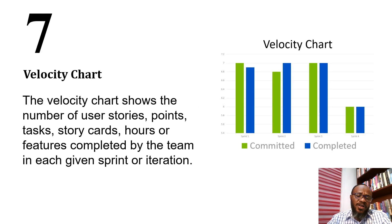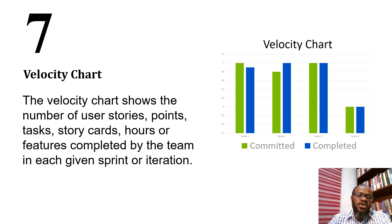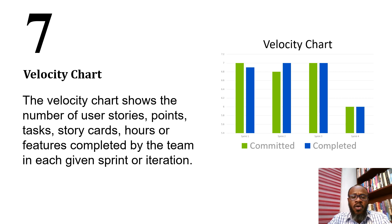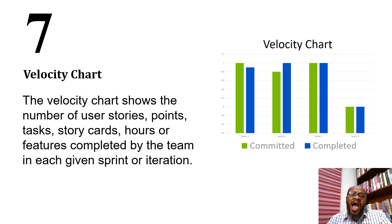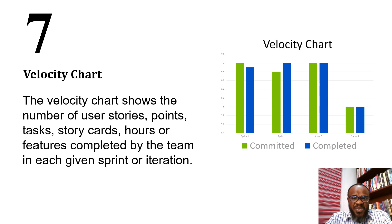With velocity comes the velocity chart. The velocity chart shows the number of user story points, tasks, story cards, hours, or features completed by the team in each given sprint or iteration. It reflects the team's velocity, showing what was planned versus what they were actually able to implement, so we can plan future work accordingly.